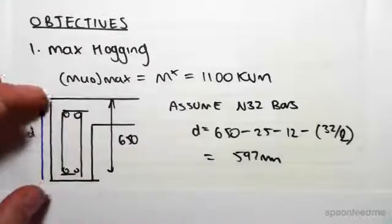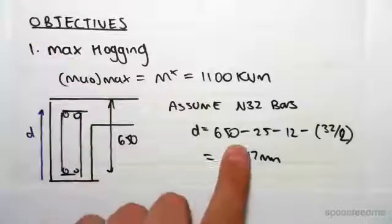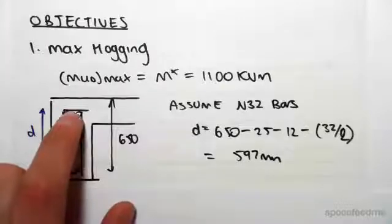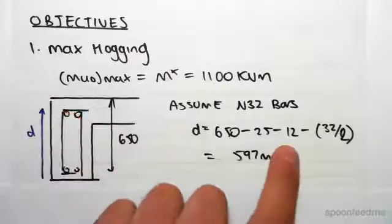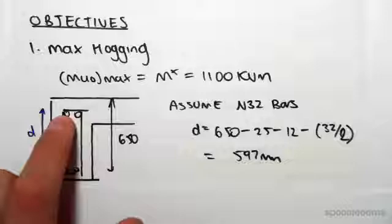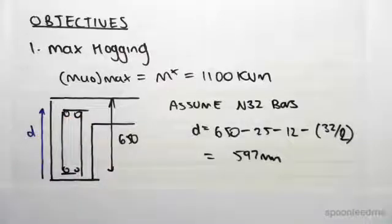We then need to find the distance d from there to the top bars. That distance will be the total depth of the beam, which is 650, minus the cover, minus the stirrups, which are N12 so 12 millimeters, minus the radius of the bar. So this distance d is to the center of the reinforcing layer.